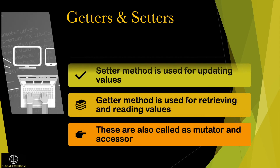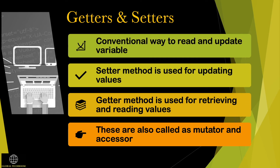Getters and setters are the way used to retrieve and update values of a variable. They are mainly used to create, modify, delete, or view the variable values. The setter method is used for updating values, whereas the getter method is used for reading or retrieving the values.